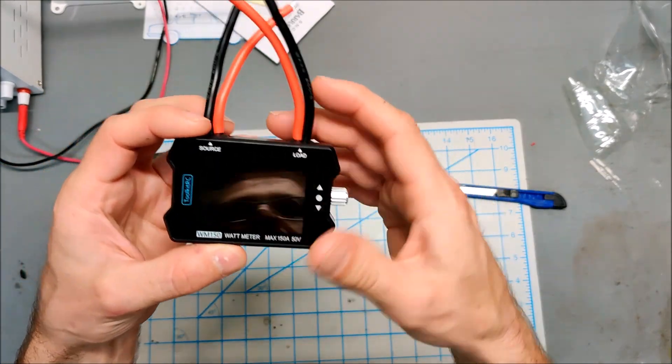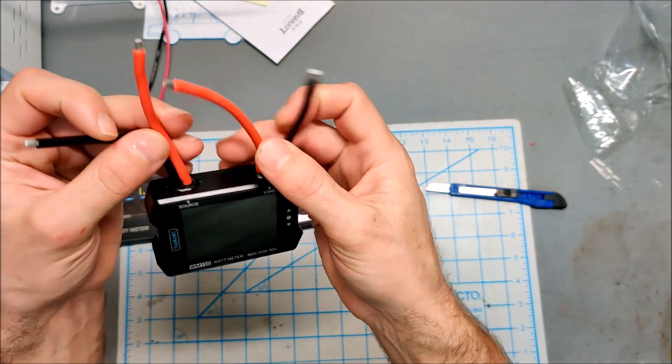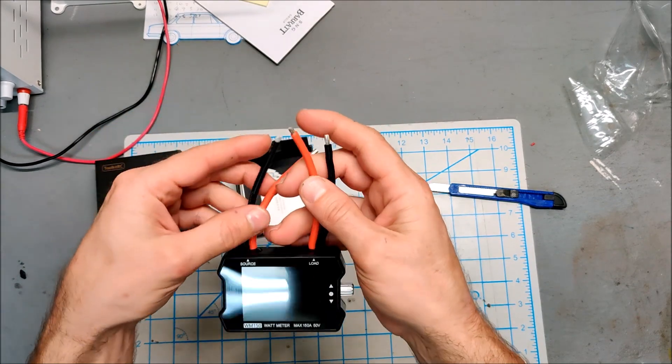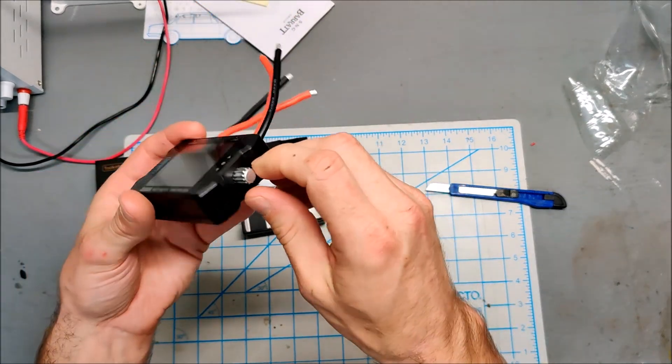Probably 50 to 60 amps through 12 gauge at the most. You could spike to 150 but I wouldn't do continuous 150 on 12 gauge. Anyways, I need to throw some XT60s on this meter and then we can do some testing with it.